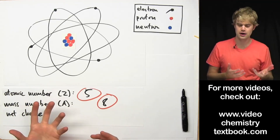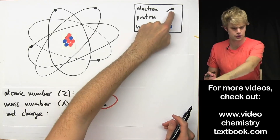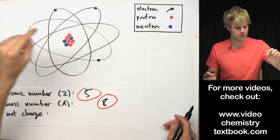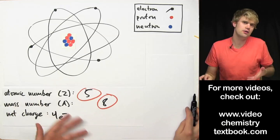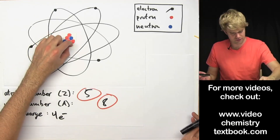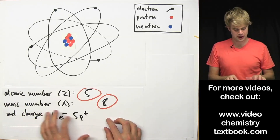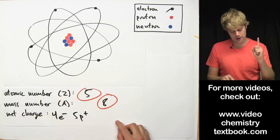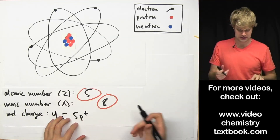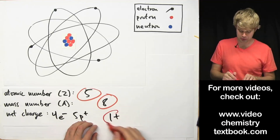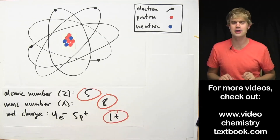The net charge is how the protons and electrons balance each other out. Electrons are represented by these things here flying around the outside of the atom: 1, 2, 3, 4 — 4 electrons. E minus is a way that we can abbreviate electron. And 1, 2, 3, 4, 5 — P plus — protons. So the protons and electrons don't quite balance out. There is one more proton than electron, so that one extra proton is going to give me a net charge of 1 plus, because each proton has a positive charge and I have one extra proton. Net charge of 1 plus.